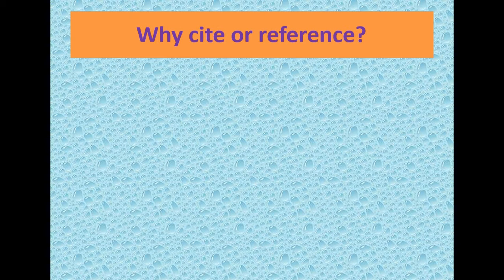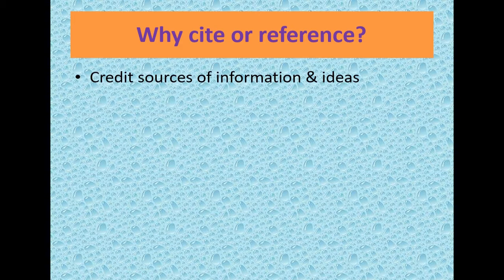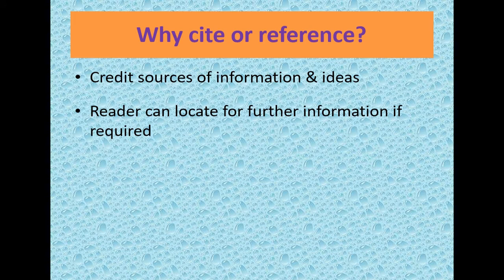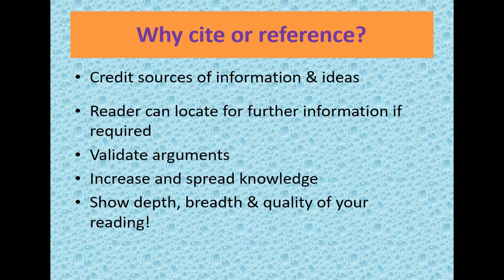Why cite or reference? Why do we need to give a citation or reference? First, to credit the source of information and ideas. Second, the reader can locate sources for further information if required. Third, to validate an argument. Fourth, to increase and spread knowledge. And fifth, to show the depth, breadth and quality of your reading.